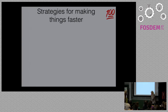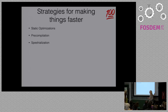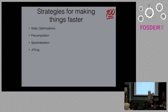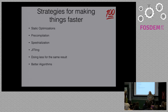What are the strategies we have for making things faster? We actually have seven strategies: static optimizations, pre-compilation, specialization — and this is not a spelling error — jitting, doing less for the same result, better algorithms, and manual optimizations.